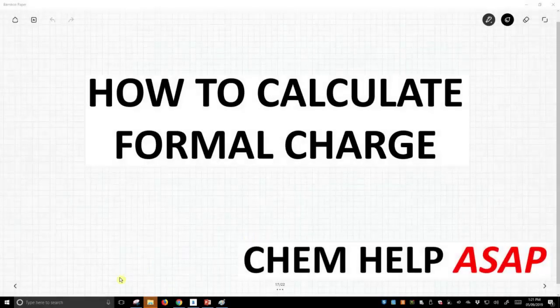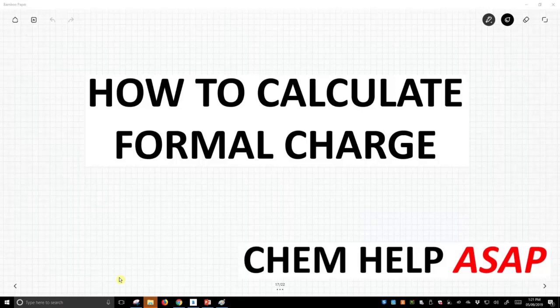Welcome to Chem Help ASAP. When we talk about valences and electrons and octet rules, sometimes as we exchange electrons between atoms, atoms will pick up a charge, a formal charge. So we need to be able to know how to calculate this formal charge.